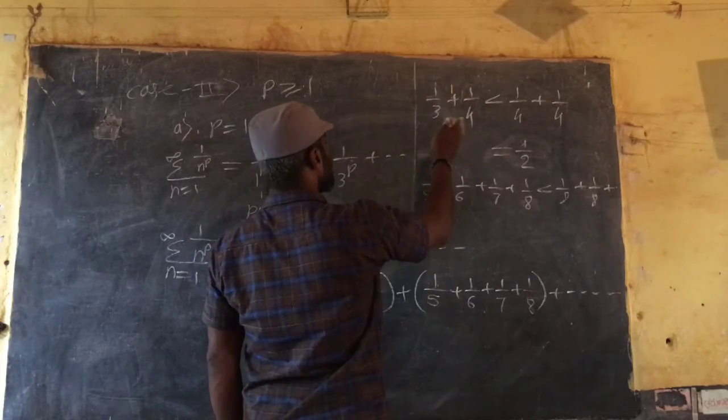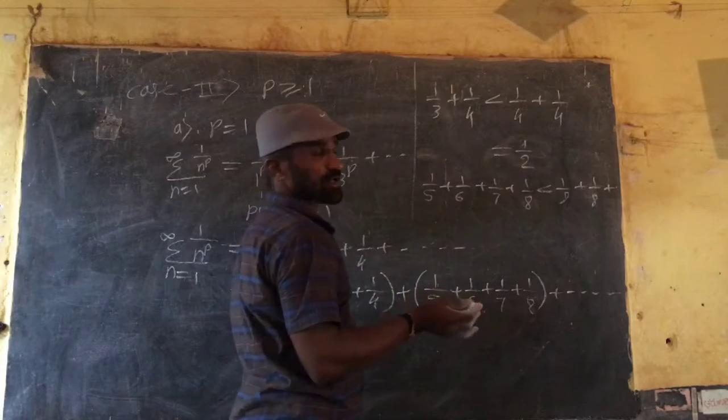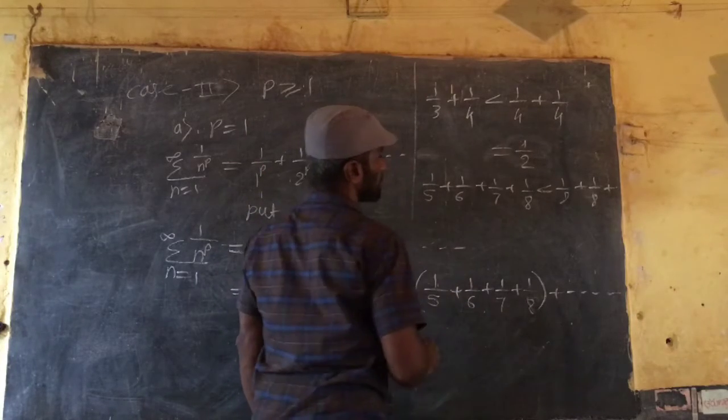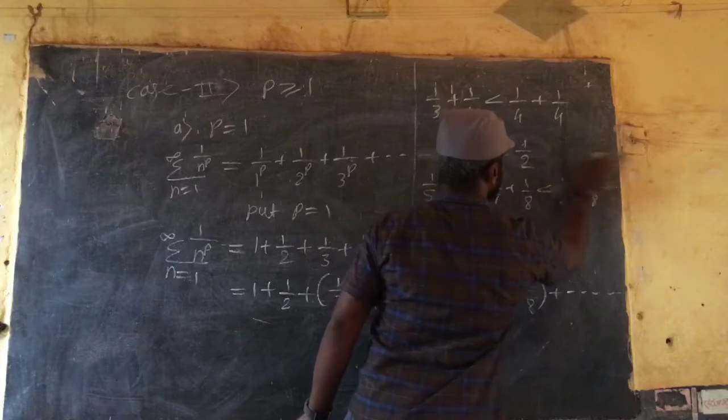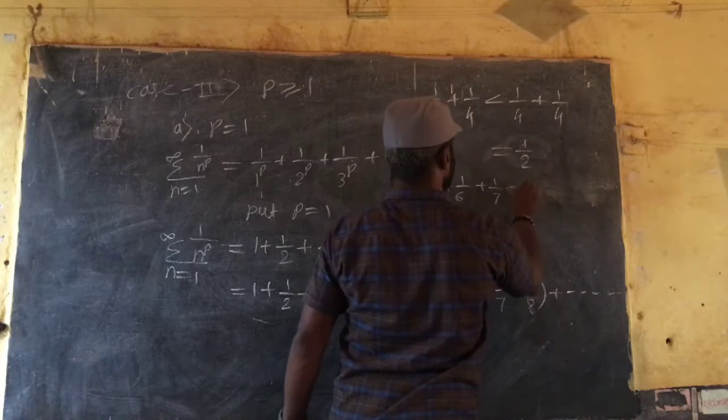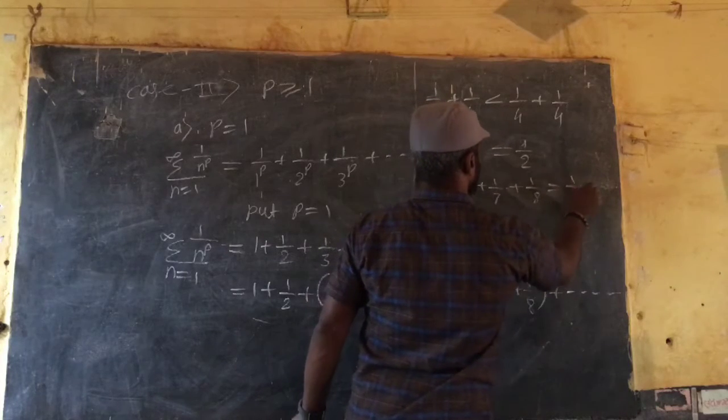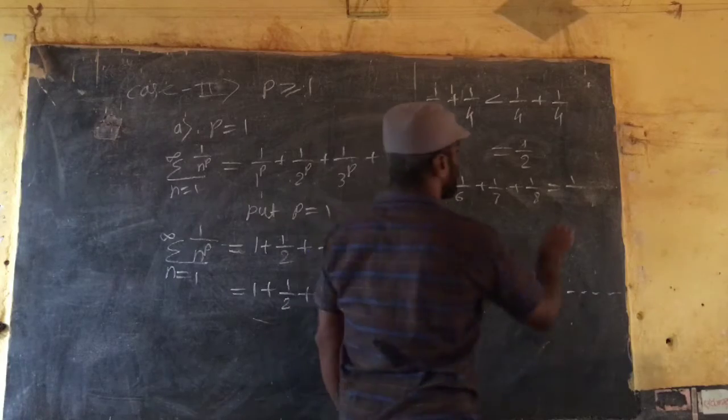Smaller than 2 numbers, so smaller than 2. It is bigger than this. 1 by 8 plus 1 by 8 plus 1 by 8. That equal to 4 divided by 8 is greater than 1. 1 by 2 number.